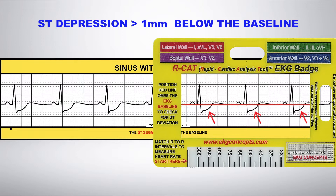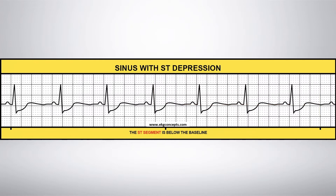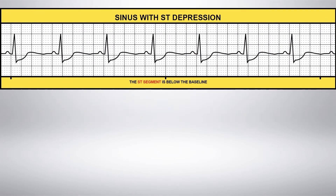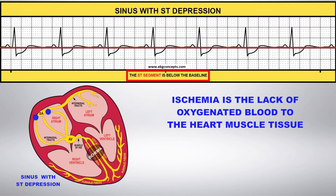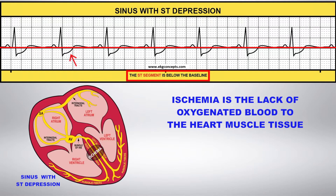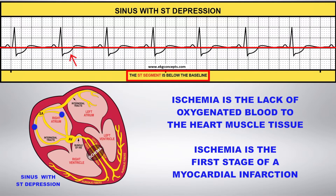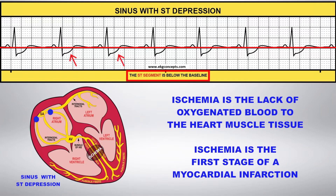This depression may indicate ischemia, which is the lack of oxygenated blood to the heart muscle tissue. This is usually caused by a narrowing of the coronary artery caused by plaque buildup. Ischemia is usually the first stage of a developing myocardial infarction.